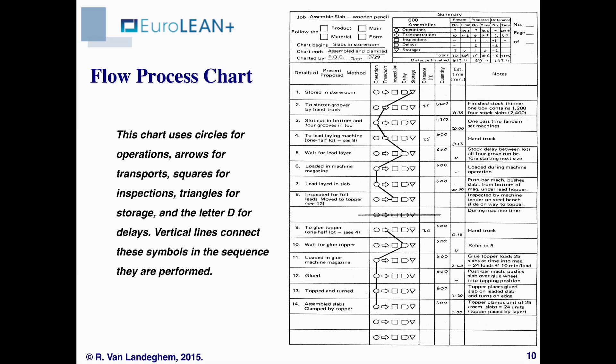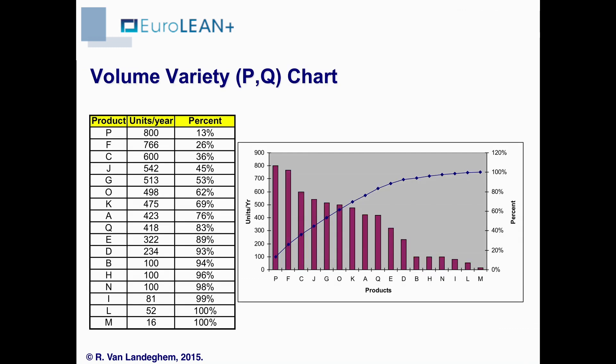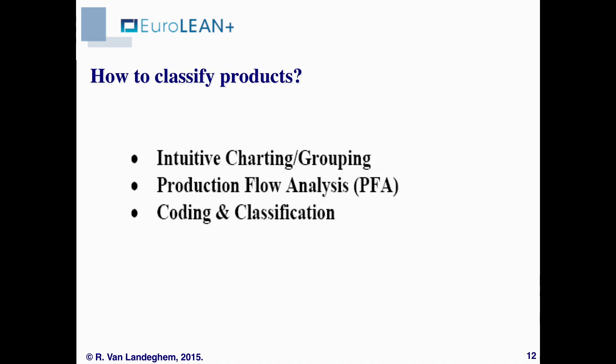The flow process chart also identifies transport requirements and so on. For demand analysis, we need the demand per year of each product, and we will mostly show it in a PQ chart or a Pareto chart, where you can clearly see that products P, F, C, and J account for almost 50% of the volume.